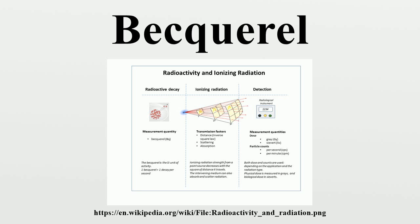For example, the roughly 0.0169 grams of potassium-40 present in a typical human body produces approximately 266,000 disintegrations per minute, which equates to about 4,400 disintegrations per second, or 4.4 kiloBecquerels of activity.